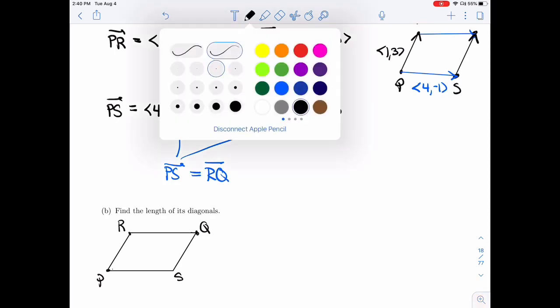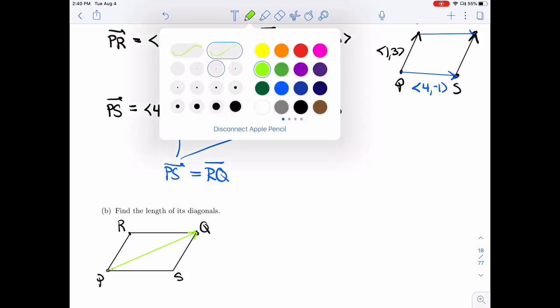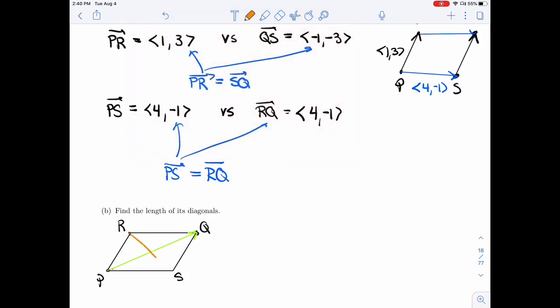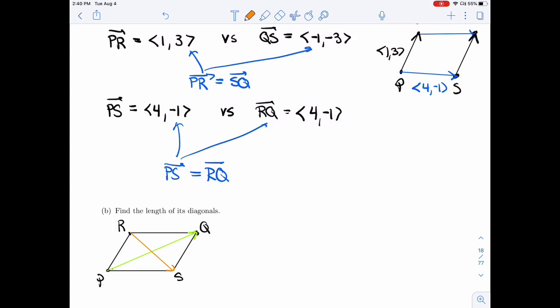And so from this picture, I know what the diagonals are. The diagonals are PQ, and they're RS. So the first diagonal, I'll put this one first. There's no real order here.